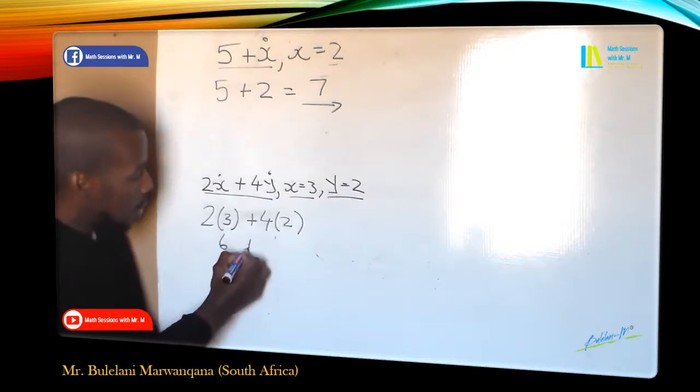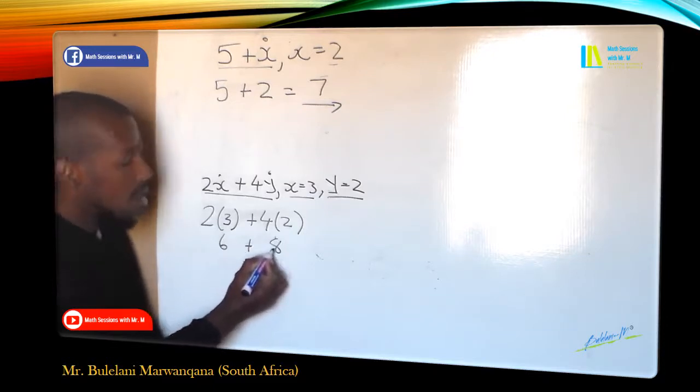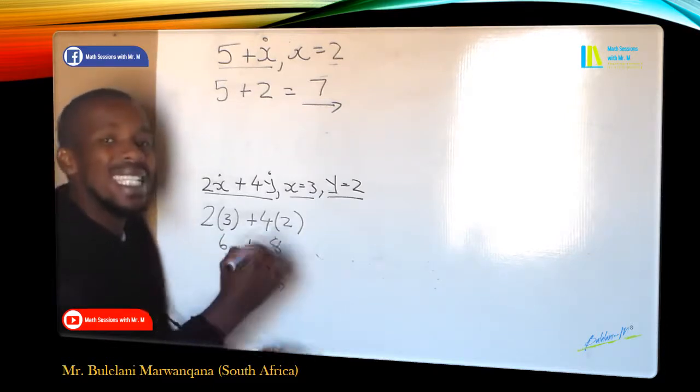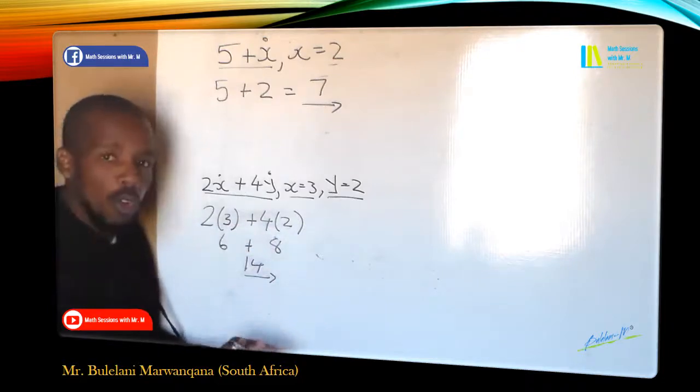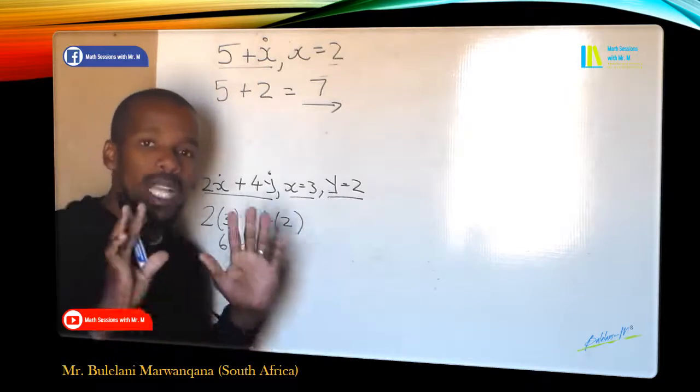And 6 plus 8 gives us a total of 14. And that is evaluating two variables, which is X and Y in this case. So that's all from Mr. M.